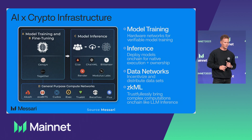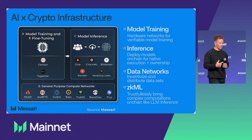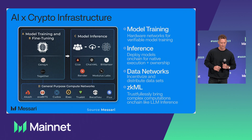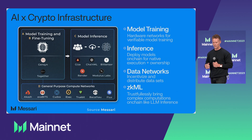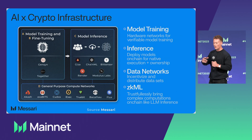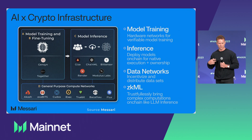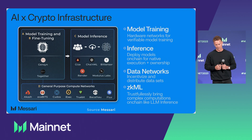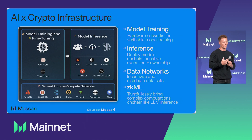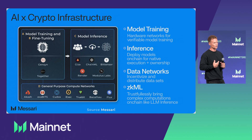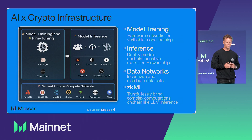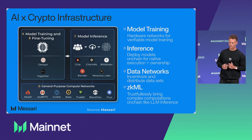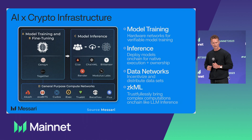That's also on the inference side. Inference is simply when I call the API for the LLM and it returns a response. There are projects like Giza where you can upload a model and the network runs it. You're also going to need data networks — how do you incentivize the collection of driving data, for example, in a private and scalable way? And where to store the data — we've touched on Filecoin and Arweave for this.